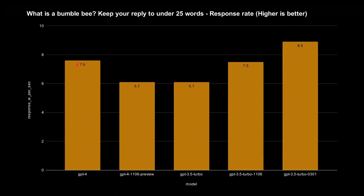The response rates here are: 7.6 words per second, 6.1, 6.1, 7.5, and 9 words per second for Turbo 0301. When the content is very short, the reply rate is broadly the same across models — around 6–7 words per second. So if you're using the API and need faster replies, limiting the number of output tokens is a good strategy to improve overall performance.